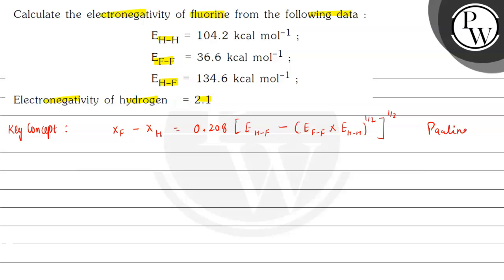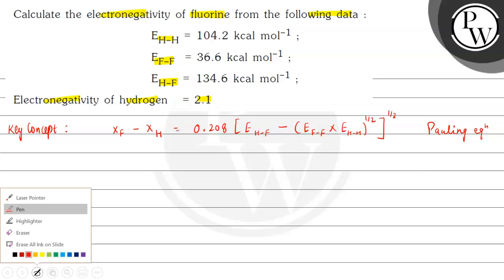So we know that this is Pauling's equation. Now what we will do here. Now we substitute the values.